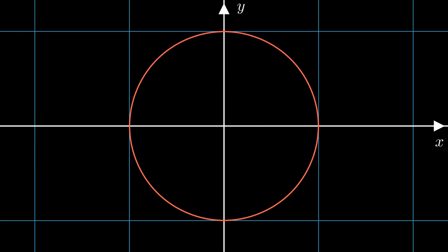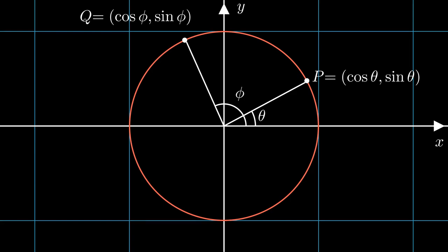Now to the problem at hand. Suppose that we know the sine and cosine of the angles phi and theta, which is the same as saying that we know the coordinates of the points P and Q on the screen. How can we then figure out the sine and the cosine of the angle sum phi plus theta, or if we think more geometrically, the coordinates of the point R on the screen? Granted, this problem is of course not among the hardest problems in all of mathematics, but it's still far from easy. In fact, if you don't know what the answer is beforehand, you're probably not going to figure it out very quickly.